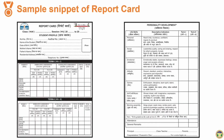Now we can see the report card for classes 1 and 2, which covers two areas. The scholastic area shows marks in different subjects. On the right-hand side are the co-scholastic areas. For the lower classes, there are life skills with descriptive indicators.